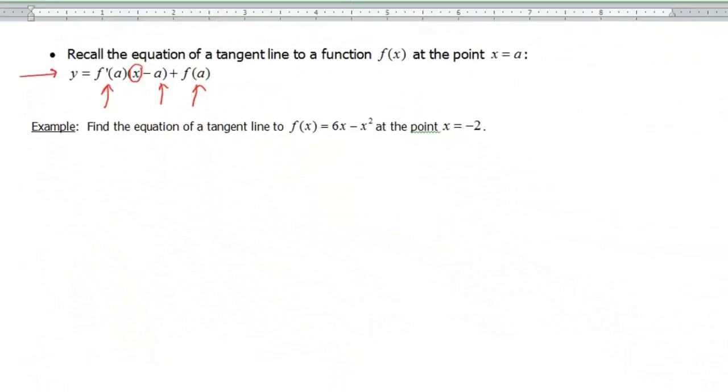Okay, so to work this through with a specific example, I wanna find the equation of a tangent line to the function f of x equals 6x minus x squared at the point x equals negative 2. All right, so you can find any of those three pieces at any point in time. I prefer to work left or right.